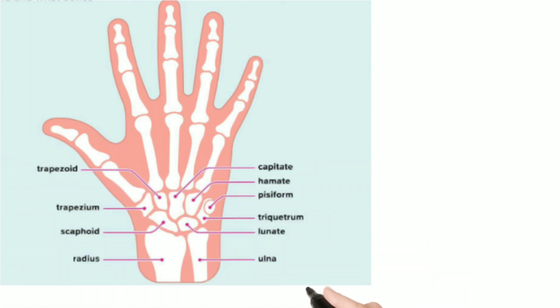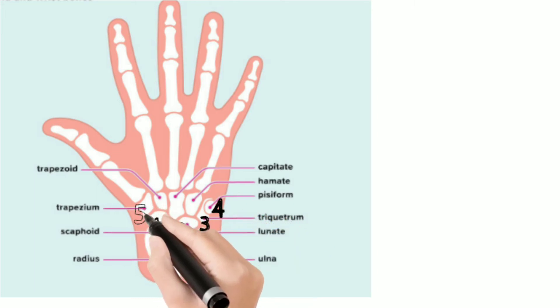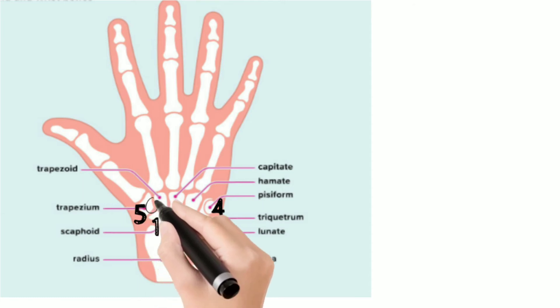These are the names of the carpal bones. Look at the palm of your left hand starting with the thumb portion. The first one is S for scaphoid, L is for lunate, T is for triquetrum, P is for pisiform, T is trapezium, next T is for trapezoid, C is for capitate, and H is for hamate.